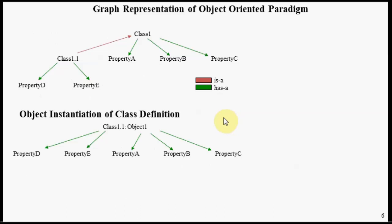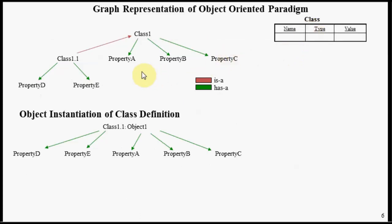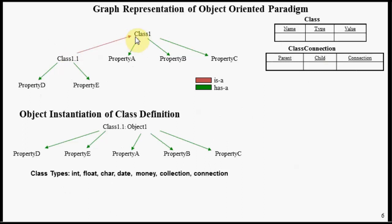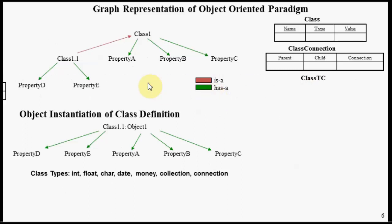Now let's look at the relational tables needed to support this paradigm. We have the notion of a class table, which represents the nodes of our class graph. It's basically a name-value pair with a type column and legal type values representing basic class types. We have a class connection table of parent-child nodes and a connection type — either HASA or ISA. We also have a transitive closure table representing the transitive closure of this class graph. Assume that this transitive closure table is automatically populated and managed whenever nodes or connections are added or deleted.